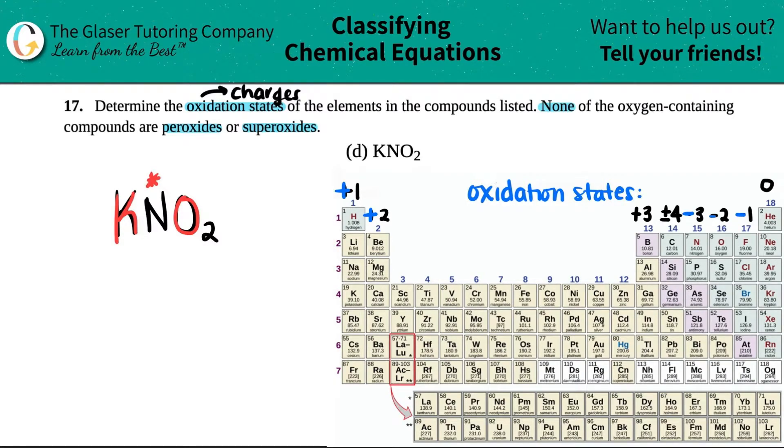The one in the middle is probably the one that you're going to need to solve for. The one in the middle usually has multiple oxidation states—not all the time, but the majority of the time.